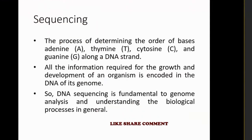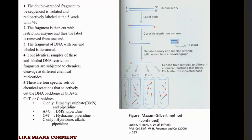After cDNA library construction, we have many genes that we want to sequence for further understanding and future analysis. In sequencing techniques, the first is the Maxam-Gilbert method. The sequential steps are: first, selection and collection of double-stranded DNA; then label at the end; then cut down with a restriction enzyme.